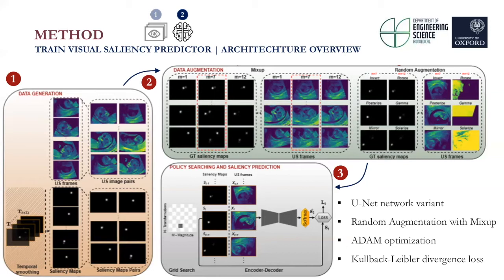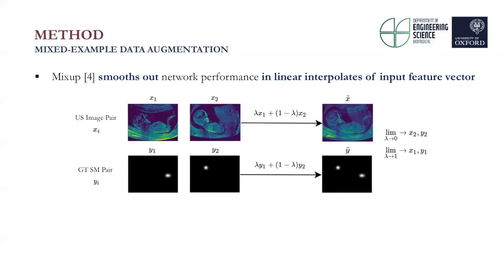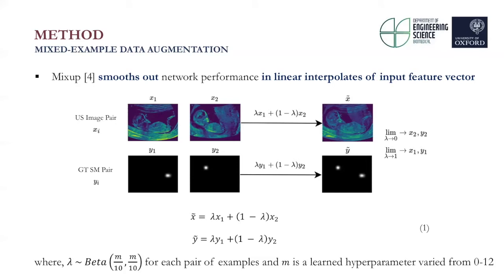Data augmentation is used to artificially increase the training dataset size and variance, helping with generalization and dataset imbalance — a common issue in medical imaging. Our data augmentation comprises mixed example data augmentation (mix-up) and random augmentation. Mix-up smooths out network performance by linearly interpolating input feature vectors. We generate two sets of ultrasound input frames and ground-truth saliency maps at random, pair them into a dataset, and extend the training distribution using element-wise weighted averaging of two random examples, producing artificial mixed-example image pairs x̃ and ỹ. Lambda is drawn from a beta distribution, with both arguments representing interpolation intensity for each pair, and m is a learned hyperparameter varied from 0 to 12.